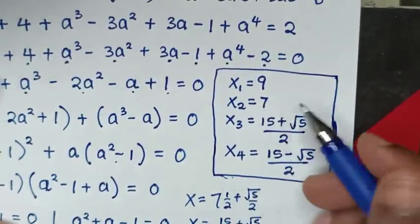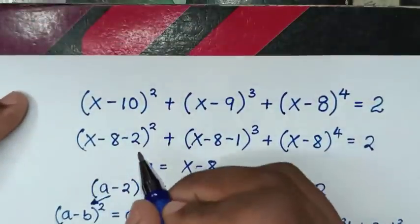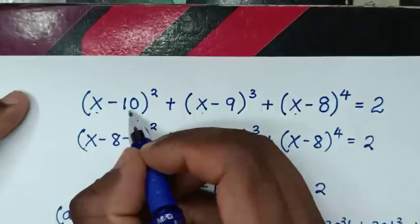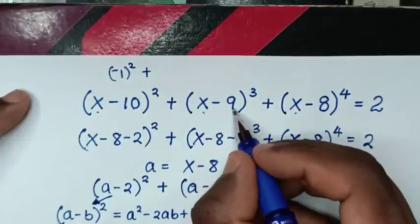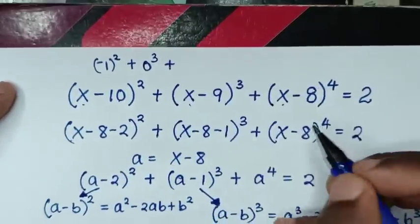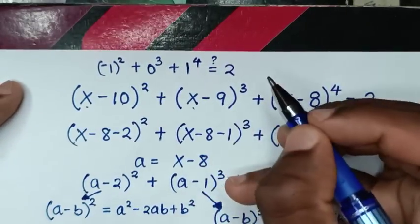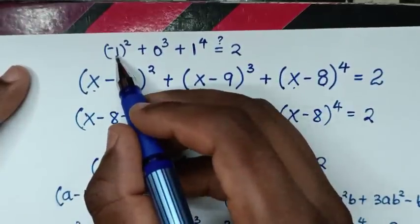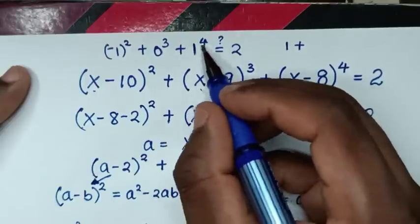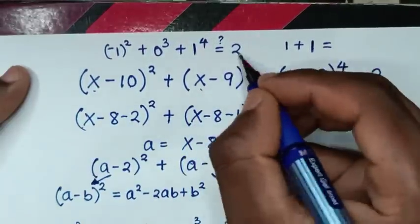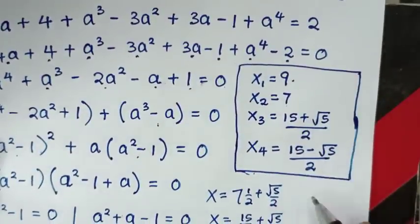Now, to check for one value of x — let's check x equals 9. We substitute 9: (9 minus 10) bracket squared is (negative 1) squared equals 1. Plus (9 minus 9) bracket power of 3 is 0 power of 3 equals 0. Plus (9 minus 8) bracket power of 4 is 1 power of 4 equals 1. So 1 plus 0 plus 1 equals 2, which confirms x equals 9 is correct. It is therefore true for the other values of x as well.